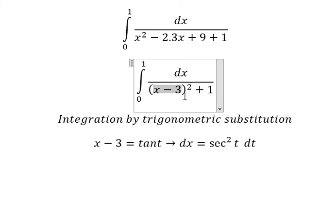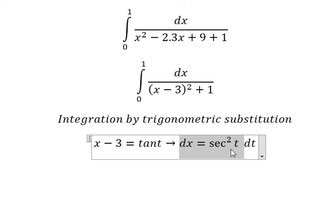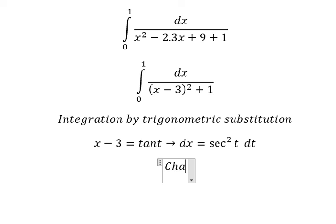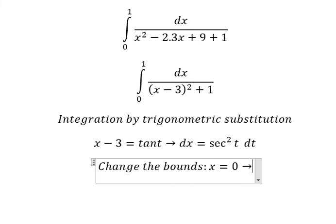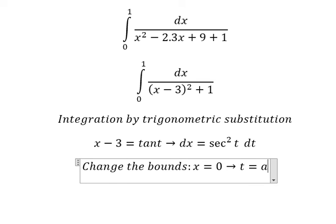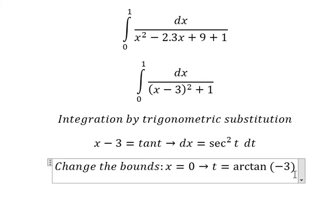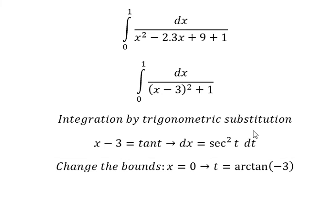tan²(t) plus 1, we change to sec²(t) and later we simplify. Next, we need to change the bounds. When x equals 0, we put 0 in here and we have t equals arctan(-3). When x equals 1, t equals arctan(-2).